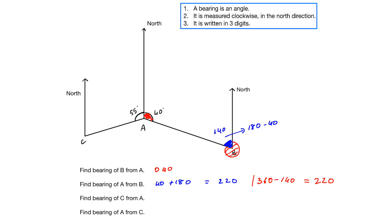Now let's move on to the next question: find the bearing of C from A. From A, we move clockwise, looking at the whole angle. Angle at a point equals 360, so 360 minus 55 gives us 305. I couldn't use the previous rule because that angle was not given to us.